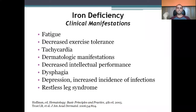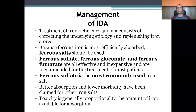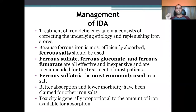Clinical manifestations of IDA include fatigue, decreased exercise tolerance, tachycardia, dermatologic manifestations, decreased intellectual performance, dysphagia, depression, and restless leg syndrome. The treatment of IDA consists of correcting the underlying etiology — what caused the anemia in the first place — and replacing the iron stores. Simply adding iron without correcting the underlying cause may not be sufficient.